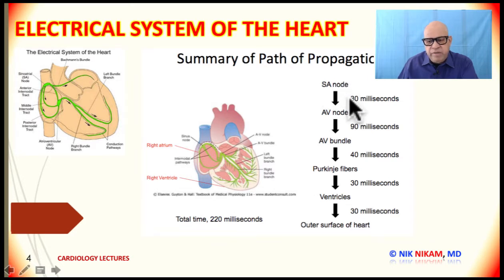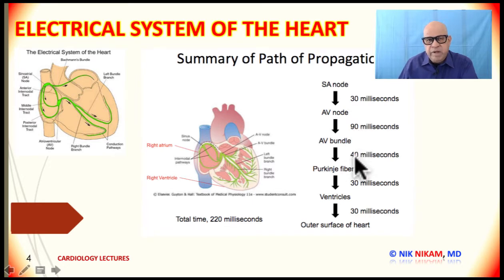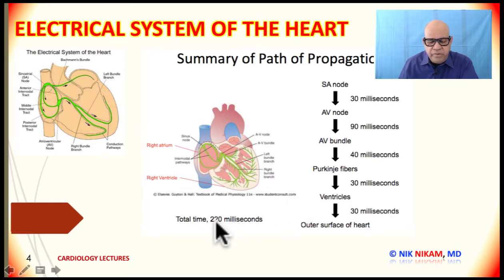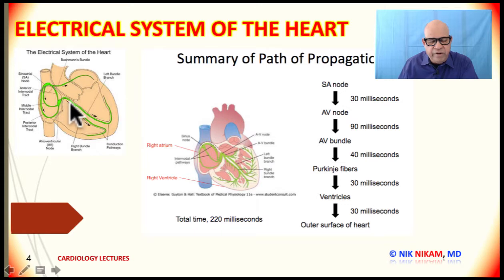Now let us look at the time intervals, which are extremely important and help us understand why there is a time delay. From the sinus node it takes 30 milliseconds for the impulse to reach the AV node. From the AV node through the bundle of His and Purkinje fibers it takes 130 milliseconds. From the Purkinje fibers it takes at least another 20 milliseconds, and then for the ventricle to be activated before it can contract takes another 30 milliseconds. Overall there is a 220 millisecond delay from the time the impulse leaves the sinus node, traverses through the bundle of His and AV node, and eventually activates the ventricles.